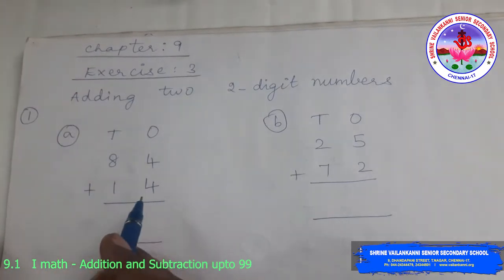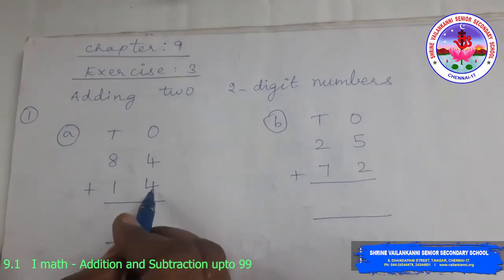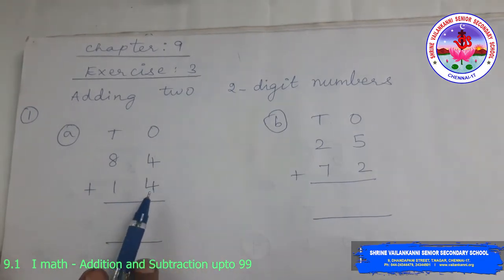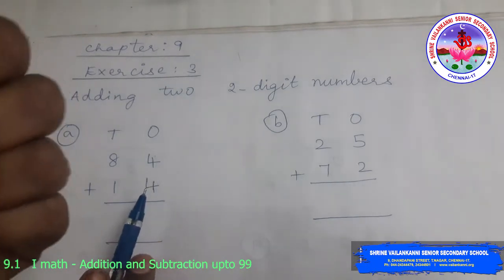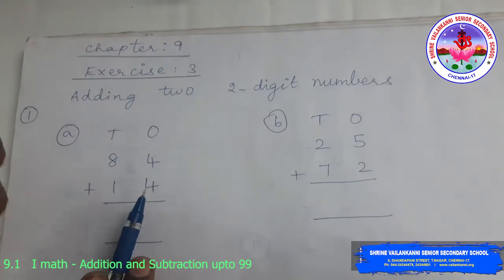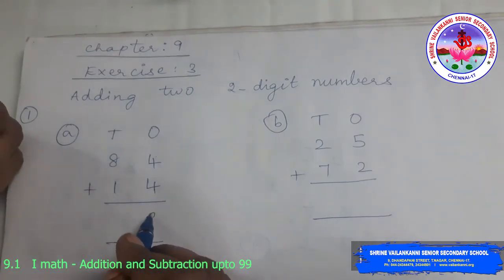So we will start in the 1s part. 4 plus 4. You keep one number in your mind and you can keep one number in your finger. Mostly use counting forward technique. 4 plus 4, after 4: 5, 6, 7, 8. So 4 plus 4 is 8.